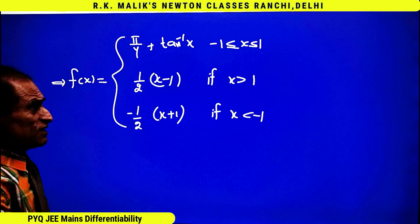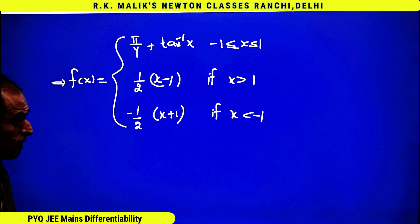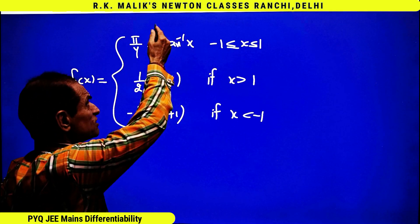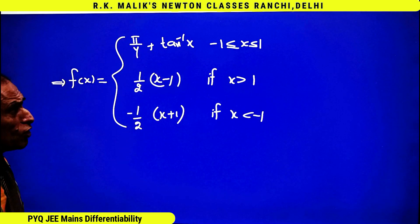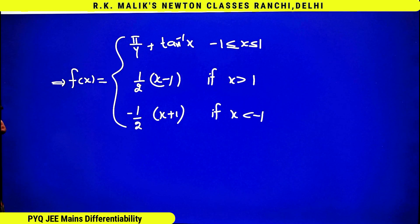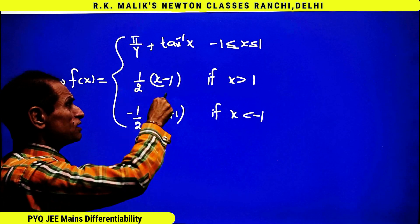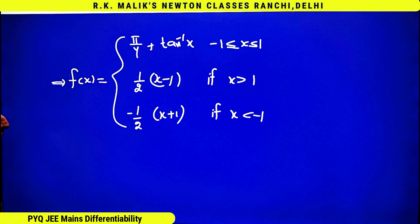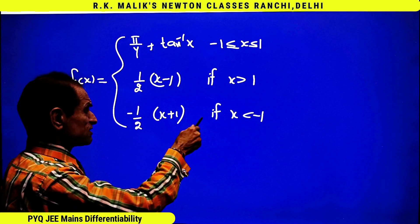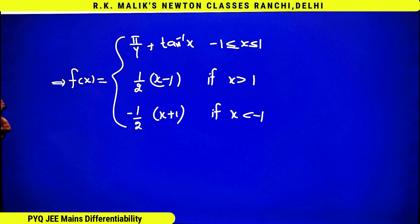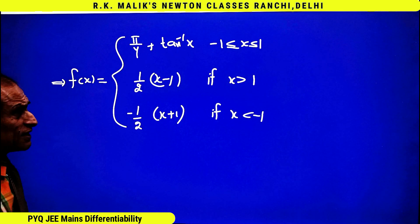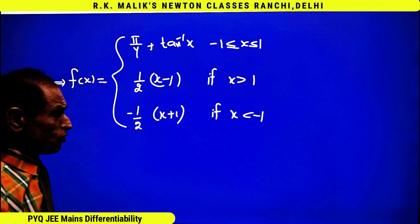The redefined form of f(x) has its definition changing at x = 1 and x = -1. Between minus one and one, this is clearly a continuous and differentiable function because tan⁻¹(x) is always continuous and always differentiable. For x greater than one, it is a polynomial, hence always continuous and always differentiable. So any discontinuity or non-differentiability can only occur at x = 1 and x = -1.